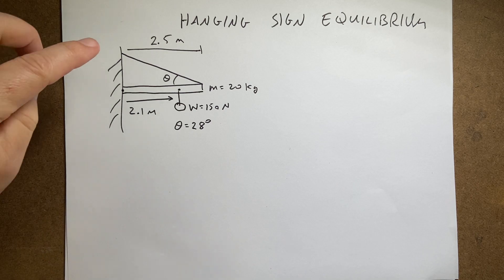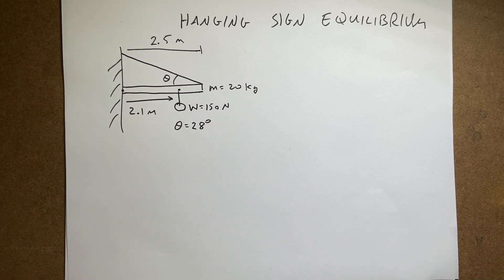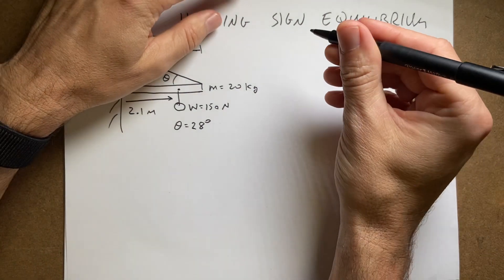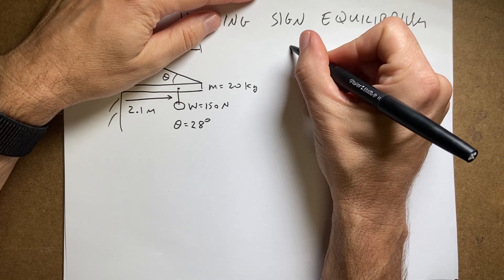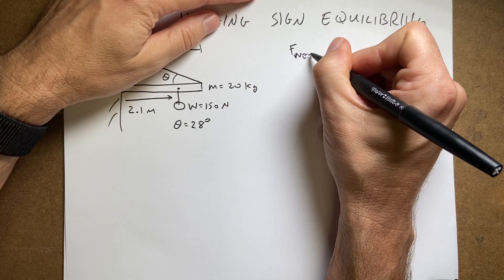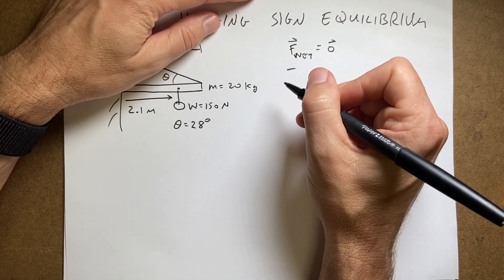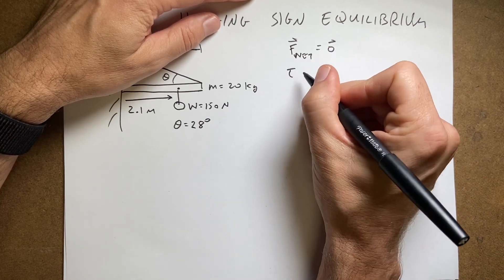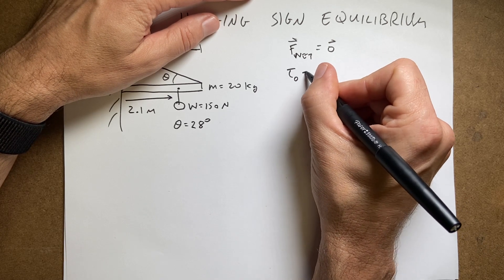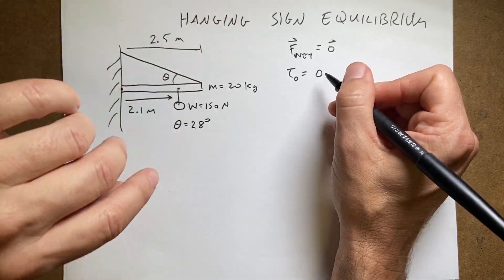So the question I'm going to first ask is what's the tension in that cable? So it's in equilibrium, and in equilibrium means the following two things: F net vector equals zero vector. I like to say vector if I pronounce it really well. Torque about some point O is equal to zero, and this is the scalar version.